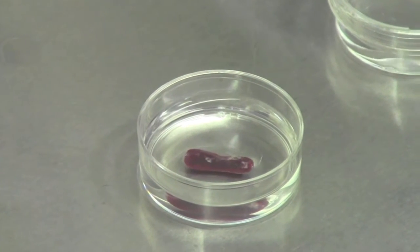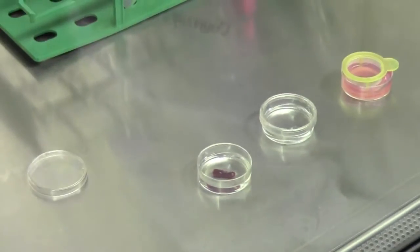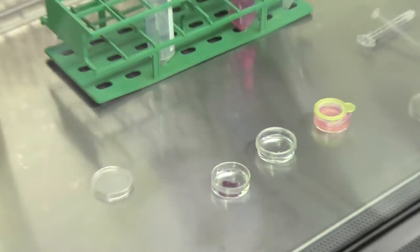First, the spleen is dissociated from a mouse and is placed into a petri dish filled with phosphate buffered saline, or PBS, in order to keep the spleen hydrated.